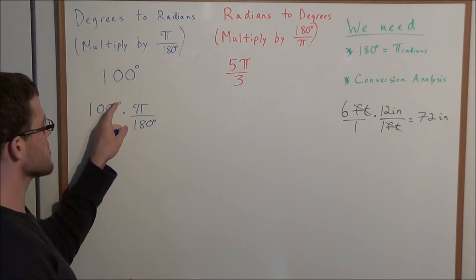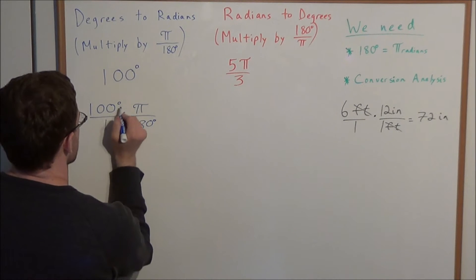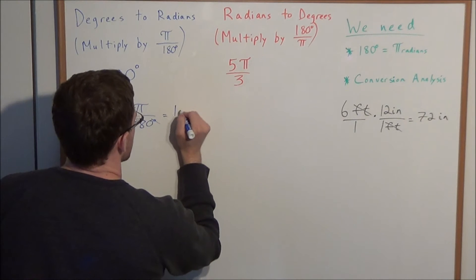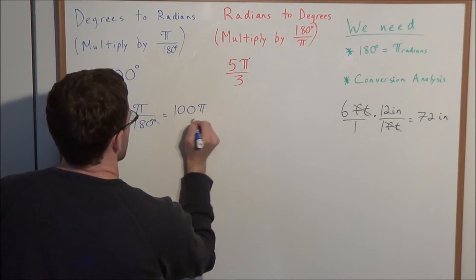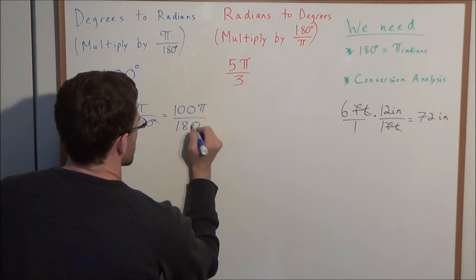The reason we're doing this, we want the degrees to be in the numerator and denominator so they cancel out. Notice how this degree symbol here is going to cancel. And we have 100π divided by 180 times 1, which is 180.